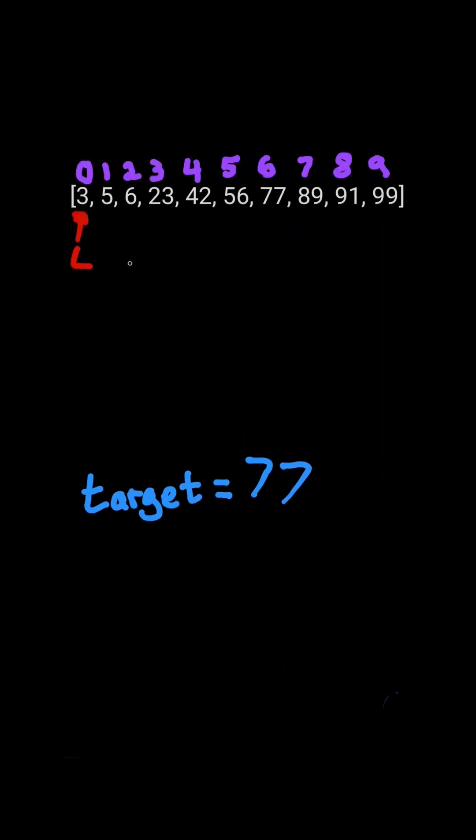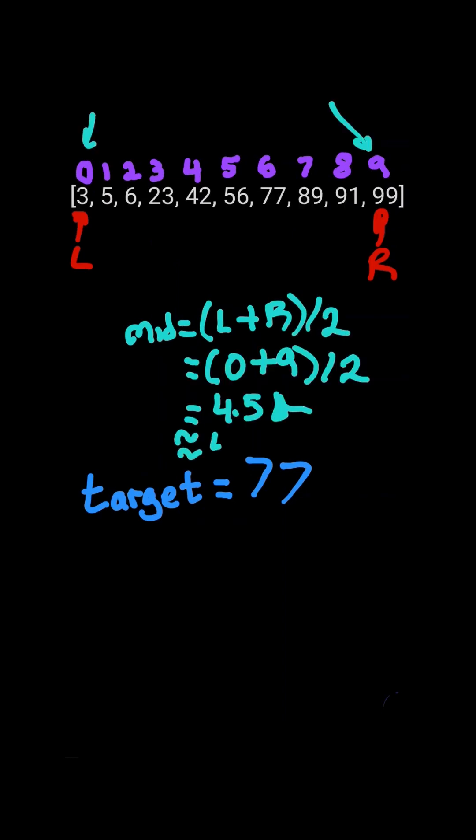We will have two pointers L and R at the start and end of the list. We will find the middle of the list by taking the indices L and R and dividing it by two. And if we ever get a decimal, we will just round down.